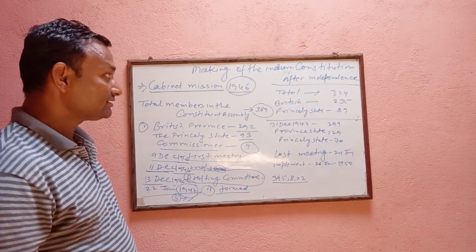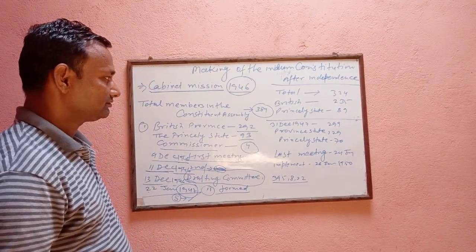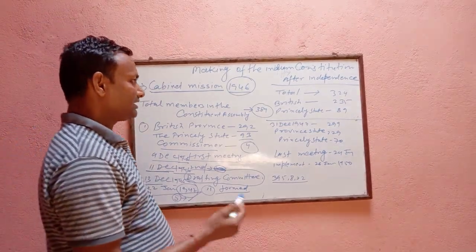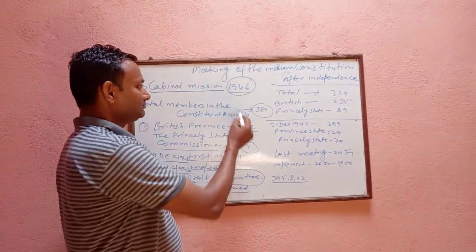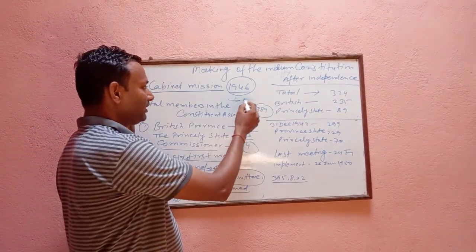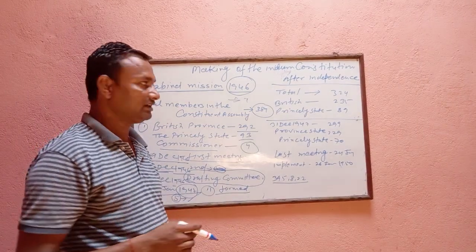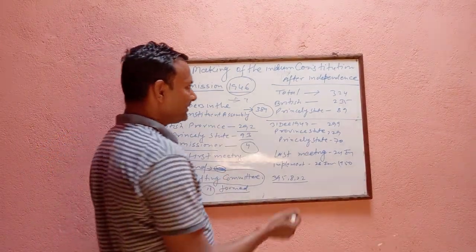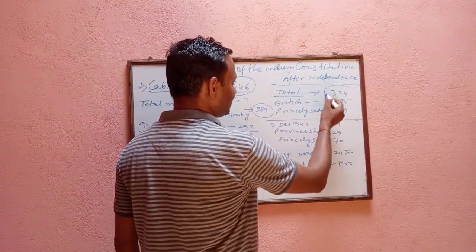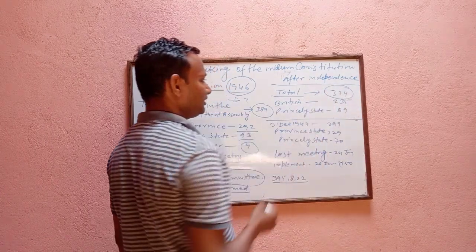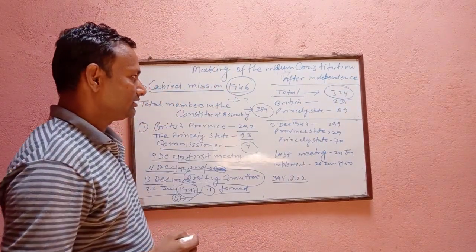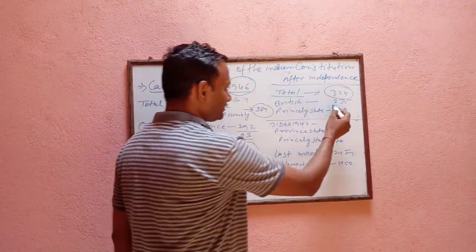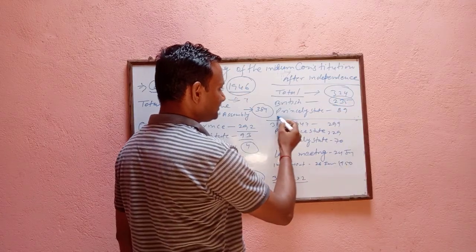After independence, India was divided into Pakistan and India. In India, the total members of the Constitutional Assembly were reduced to 324 members, of which 235 members were from the British provinces through election.